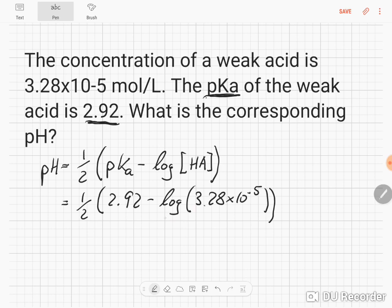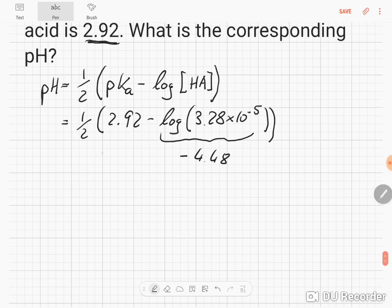Let's calculate the first part. That gives us negative 4.48. So we have 2.92 minus negative 4.48, and that is half. Let's calculate what we've got in the bracket.